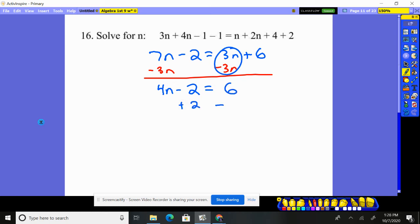Add 2, add 2. 4n equals 8. We now divide by 4, divide by 4. n is 2.